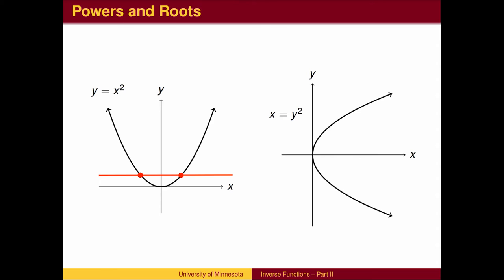For example, the function y equals x squared is not one-to-one. Each y value corresponds to two x values, one positive, one negative. If we interchange x and y, we get a graph that is not a function.